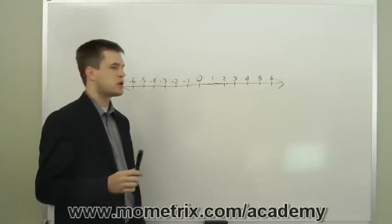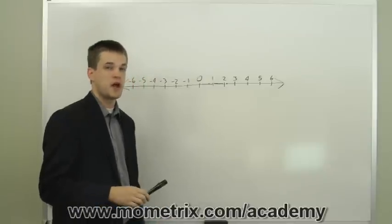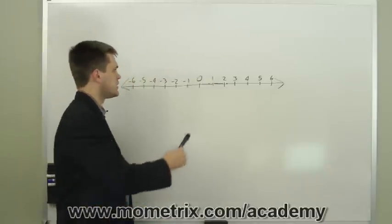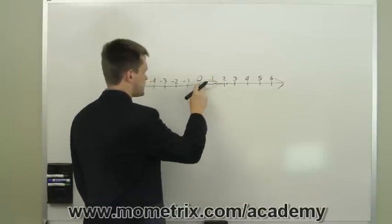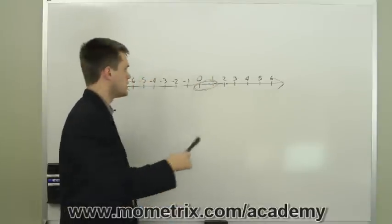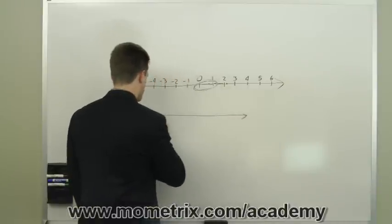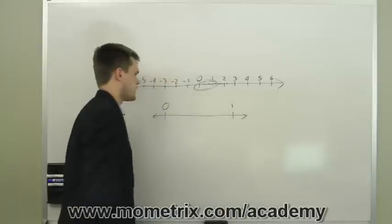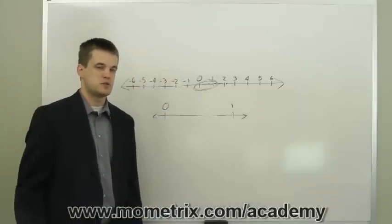Any number between two integers can be represented both as a fraction and as a decimal. To demonstrate this I'm just going to enlarge essentially this section of the number line right here. This section of the number line is now going to be represented right here. We have zero over here and one over here. We have this massive space in between where there are no integers.